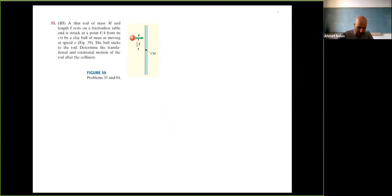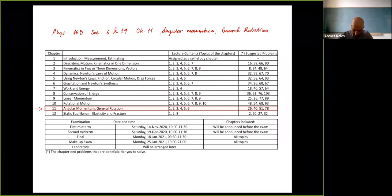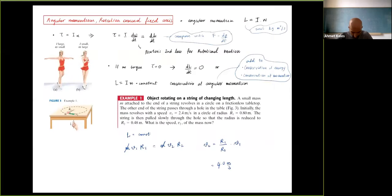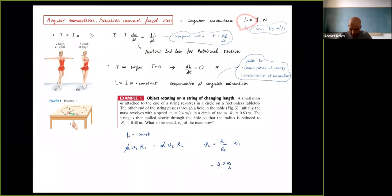Let me start with a quick recap. This week we started talking about angular momentum and general rotation — this is chapter 11. On Monday we started with a higher-level overview of angular momentum and rotation about a fixed axis, and we showed that angular momentum defined this way gives us torque equal to dL/dt, similar to F = dP/dt.